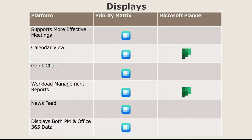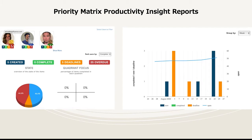Priority Matrix and Planner both support different views of your data, helping you see your priorities across the board. Both include the calendar view and reporting options. The Priority Matrix reports focus heavily on workload management, with heat maps and burndown charts, so if you need to see where your deadlines overlap in the following weeks and where you've been spending your time, the Priority Matrix report will be the best fit for you.